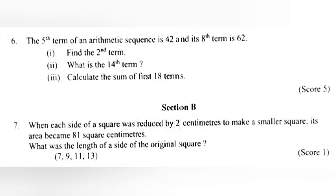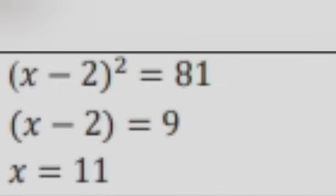Section B. Problem 7: When each side of a square was reduced by 2 centimeters to make a smaller square, its area became 81 square centimeters. What was the length of a side of the original square? Answer: 11. (x - 2)² = 81, so x - 2 = 9, therefore x = 11.